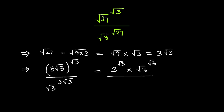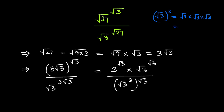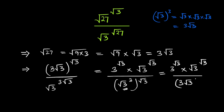For the denominator, we write root 3 raised to the power of 3, then raised to the power of root 3. Root 3 raised to the power of 3 is root 3 times root 3 times root 3, which equals 3 root 3. So the denominator becomes 3 root 3 raised to the power of root 3.